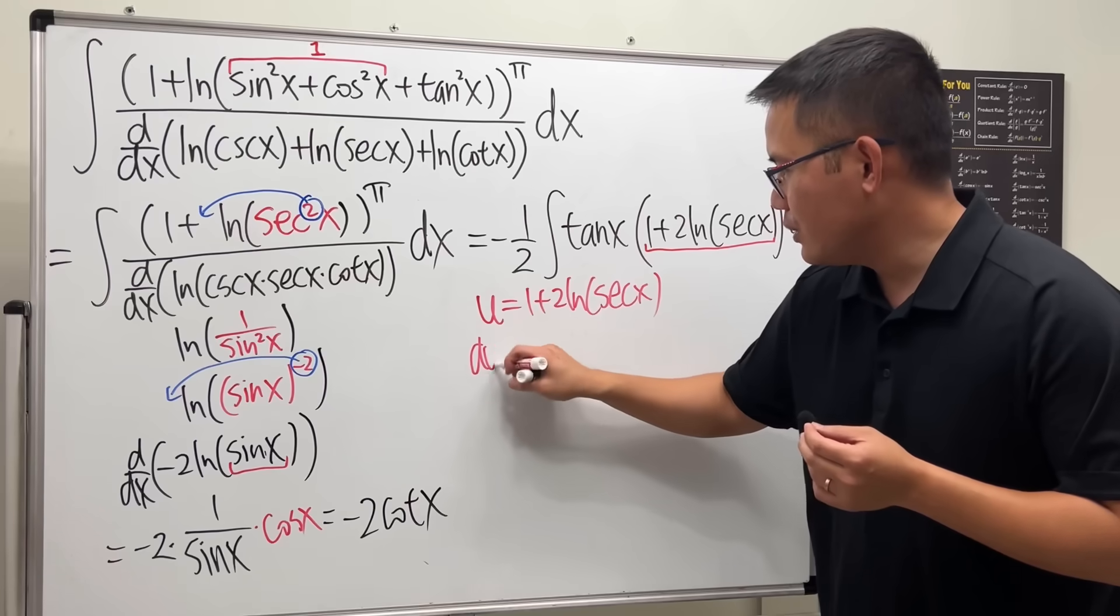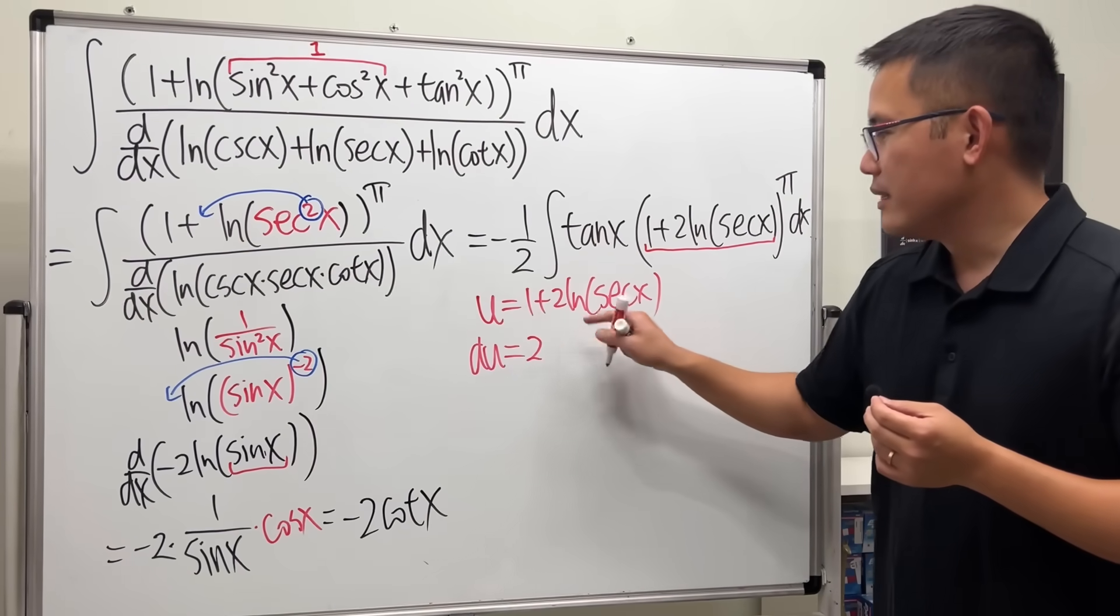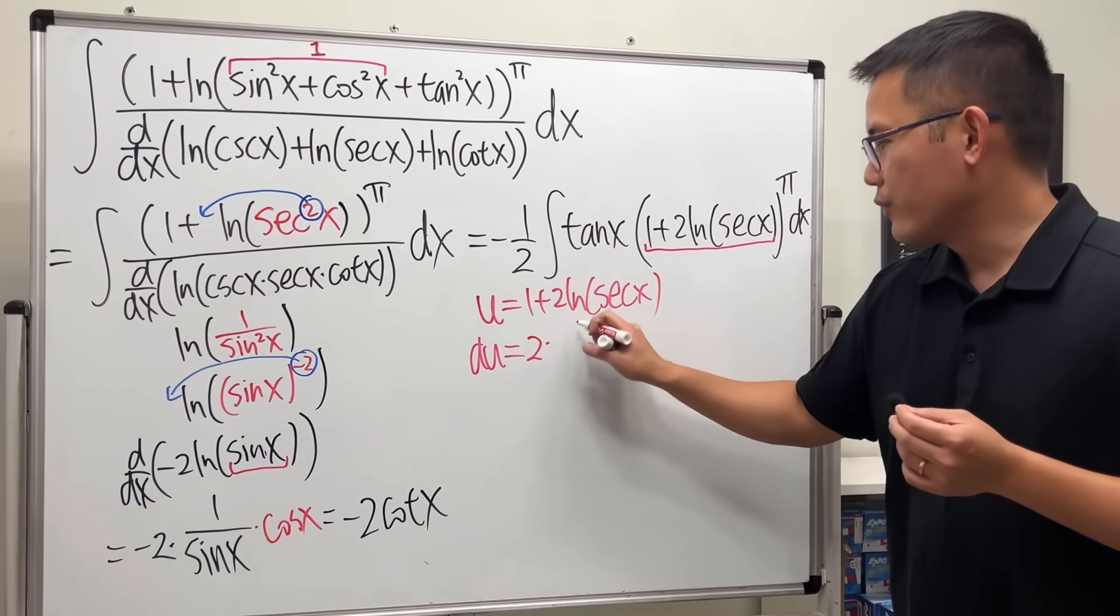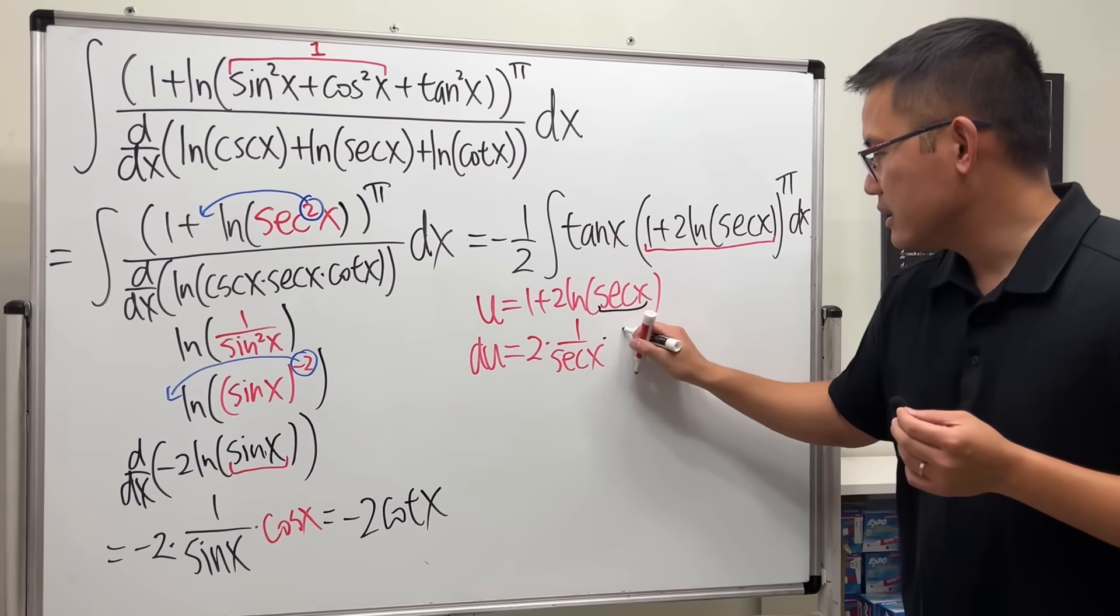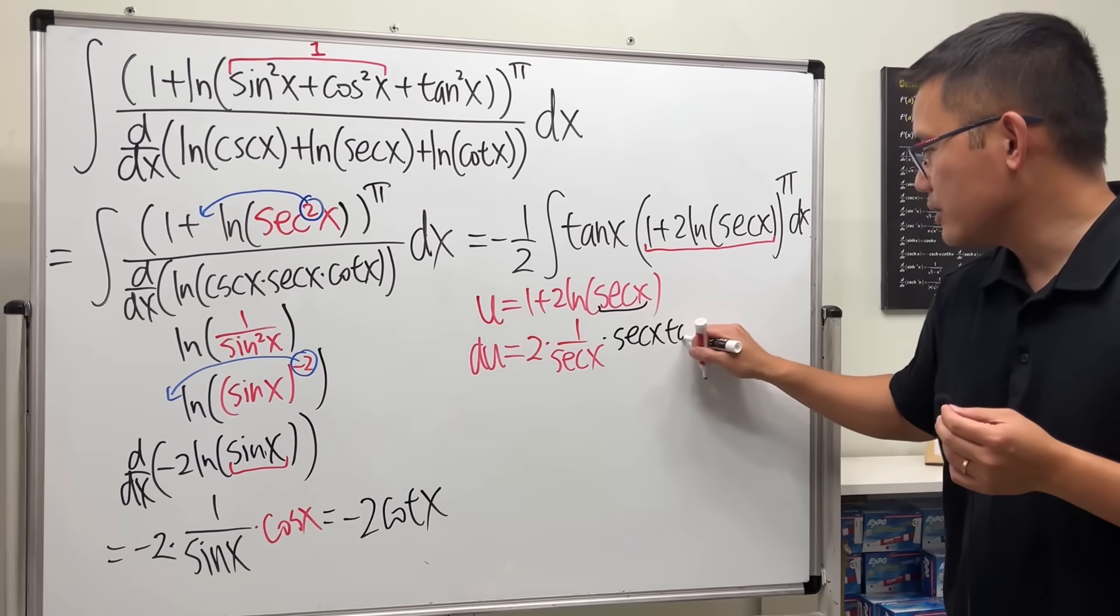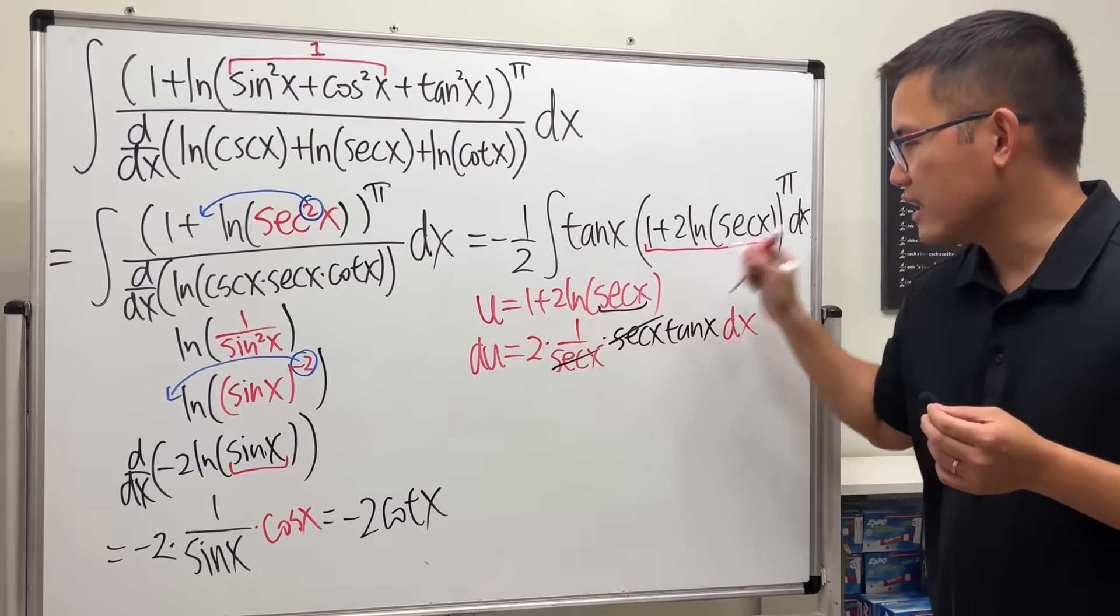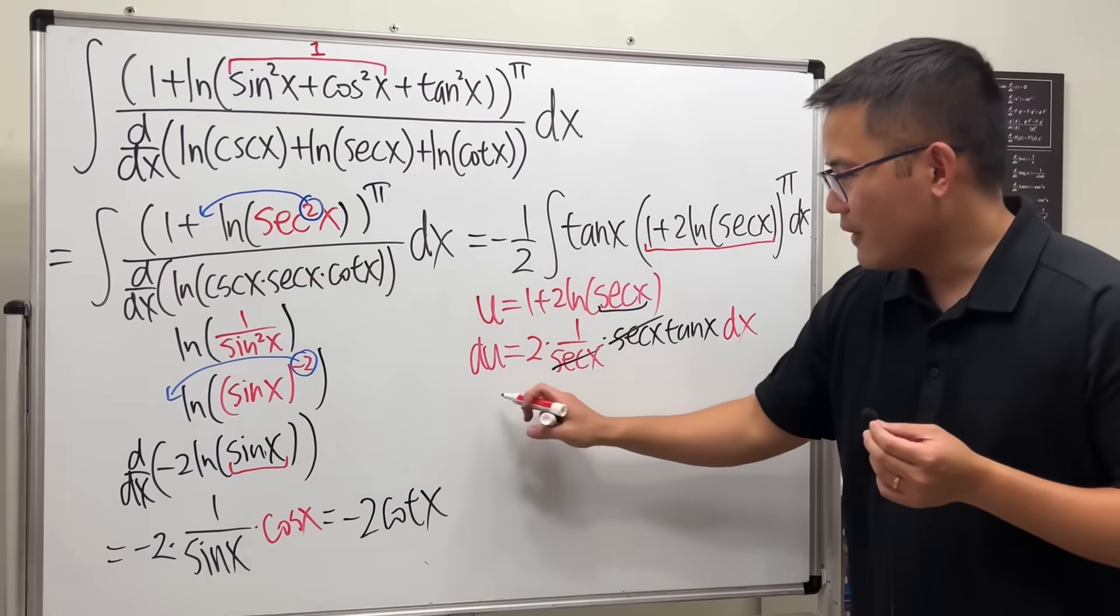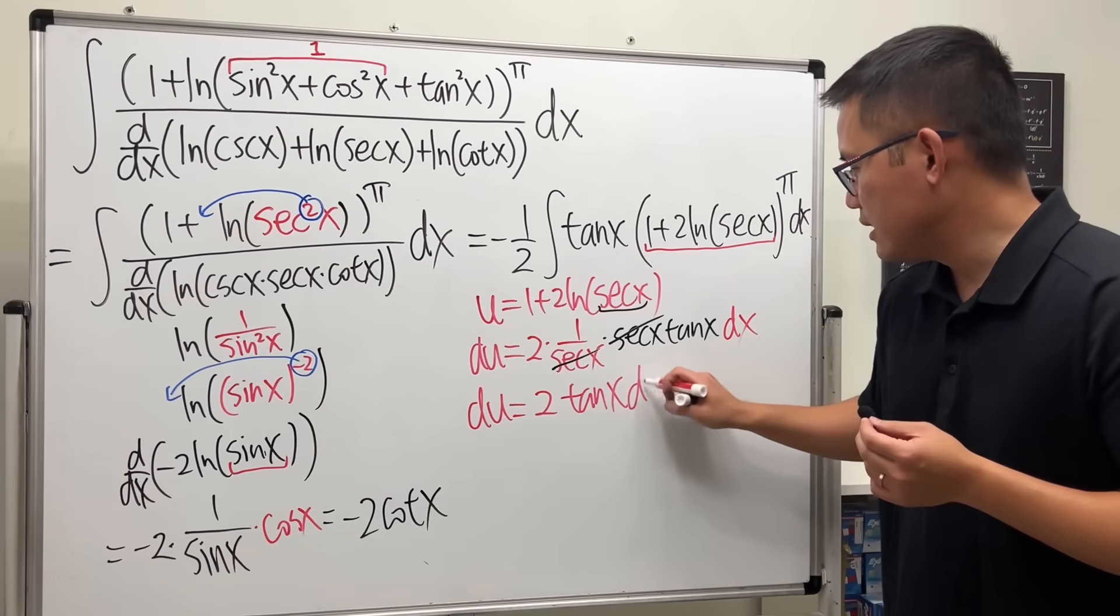Differentiate both sides, du is equal to, that's going to be 0, we have 2. Derivative of ln is 1 over that, and then the derivative of secant is secant x times tangent x. And you see, this and that cancel out very nicely. So, in fact, du is just 2 tangent x dx.